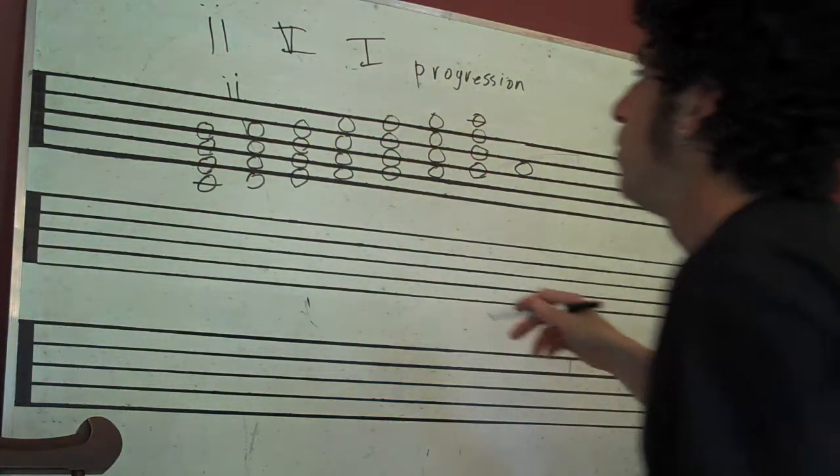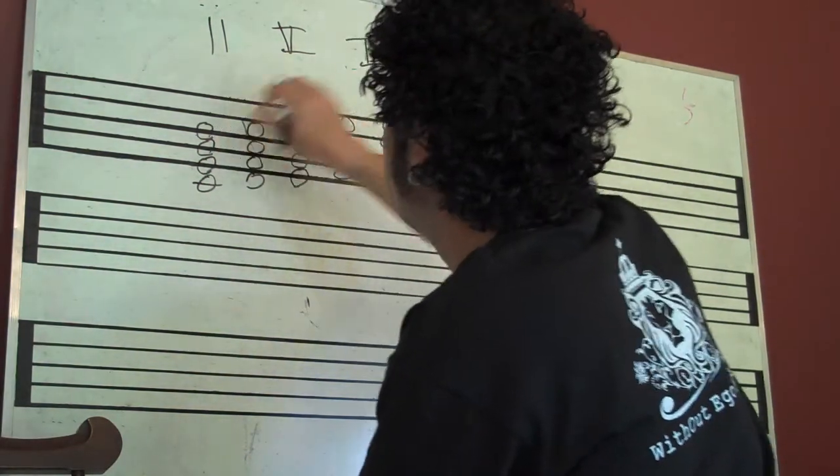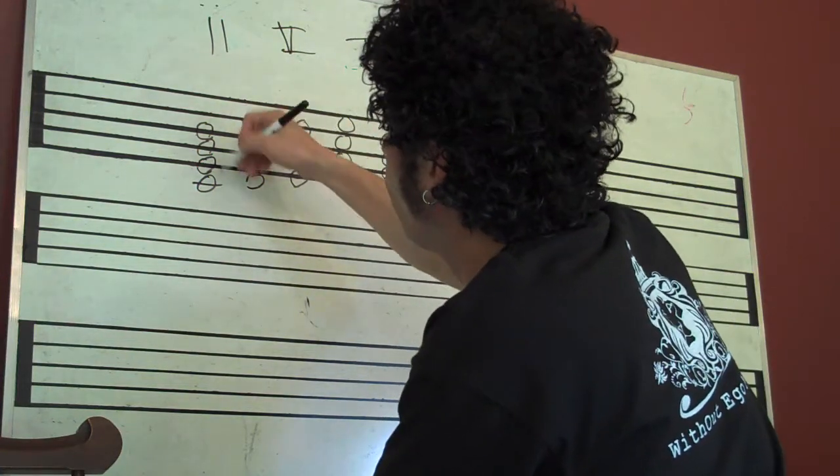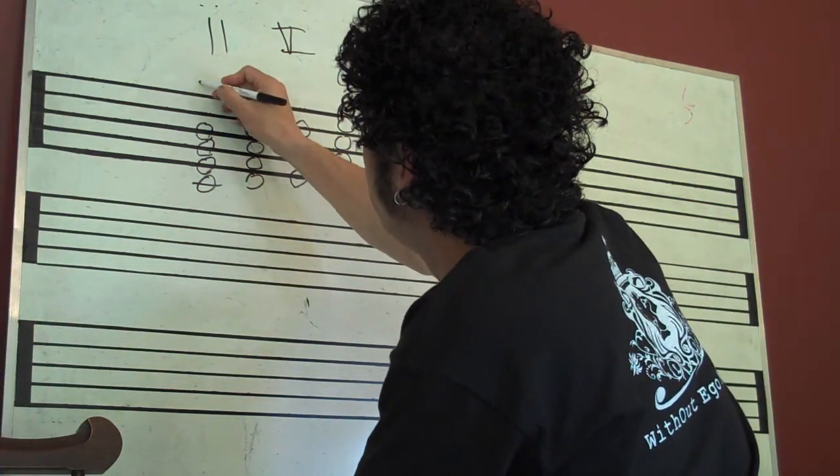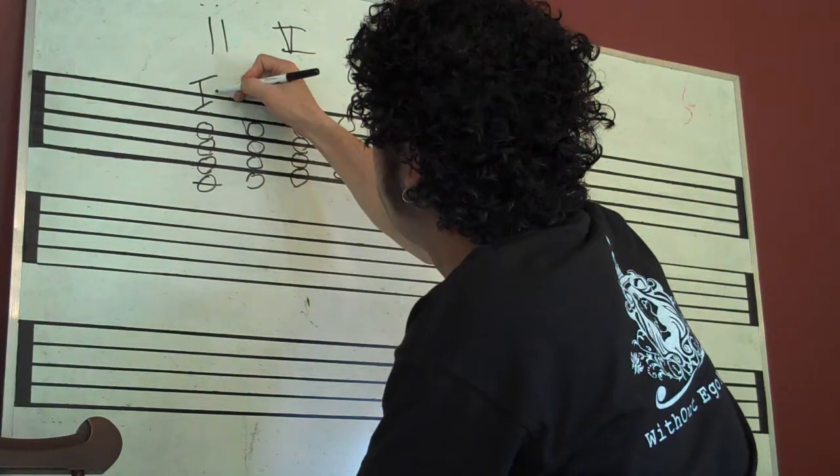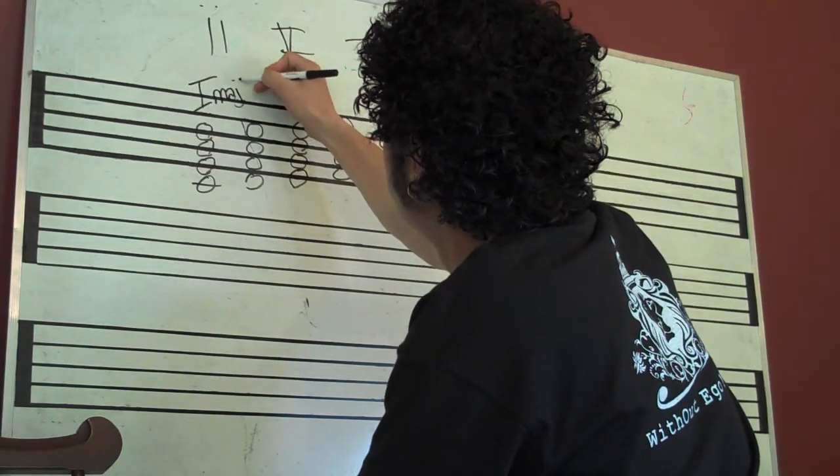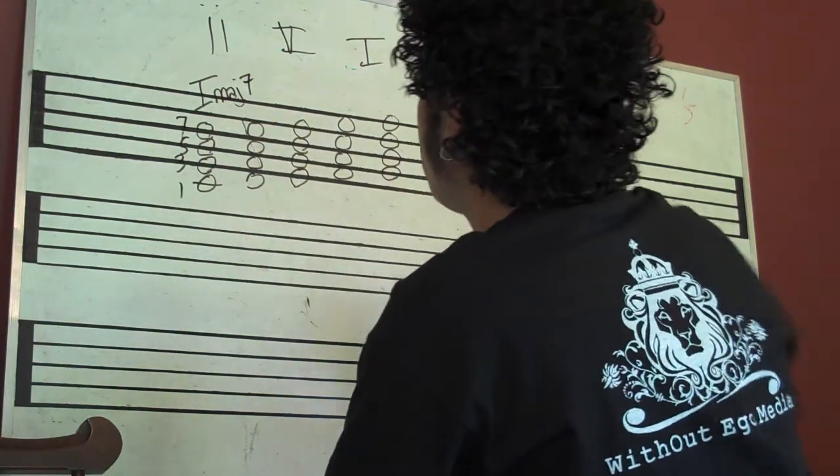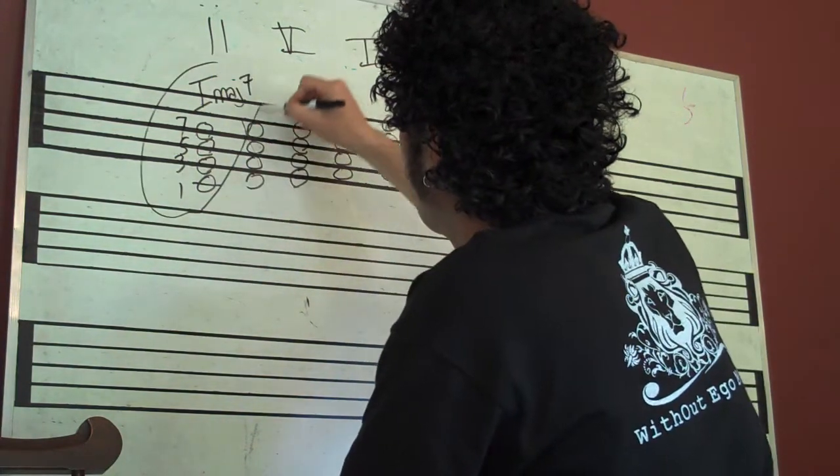Okay, so what we have here - let's not get this confused - we have our one chord, this is our root. We'll call this one major seven because we've got the one, the three, the five, and the major seven right here. So that's our one chord.